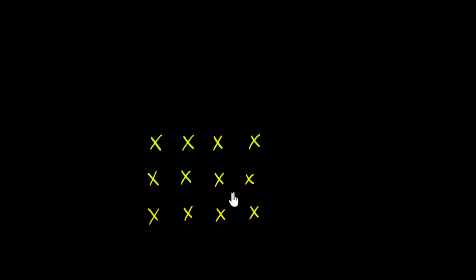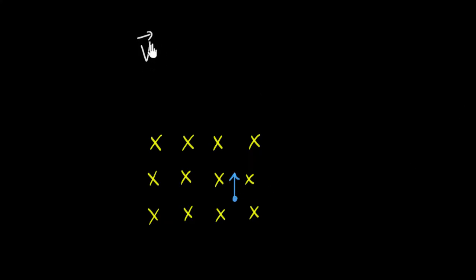Let's start with a case where you have a magnetic field which is into the board, nice and uniform. And let's consider a charged particle — let's say a proton — that's moving perpendicular to the field. So the field is inwards and we'll consider the proton going upwards. The case we're dealing with is: velocity of the charged particle is perpendicular to the magnetic field.